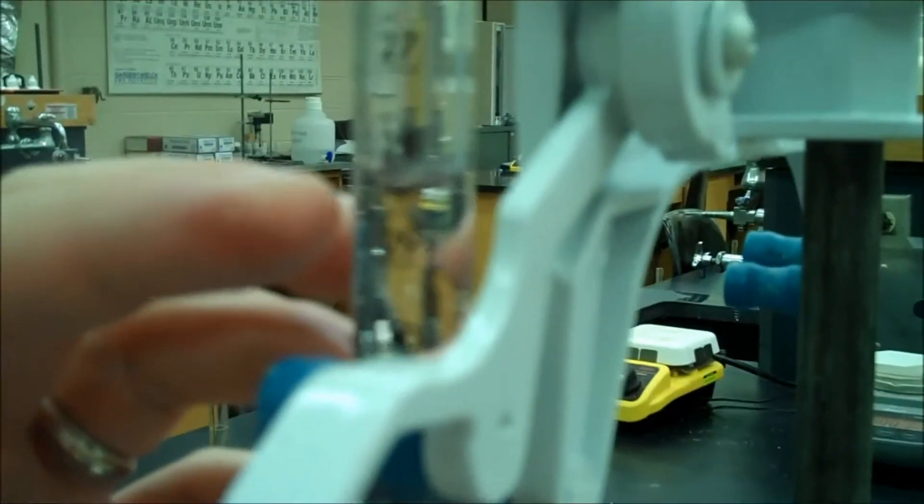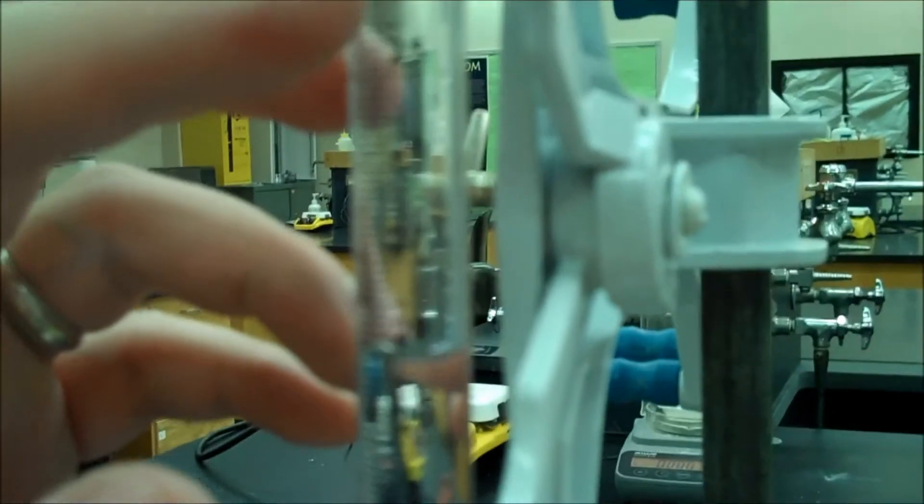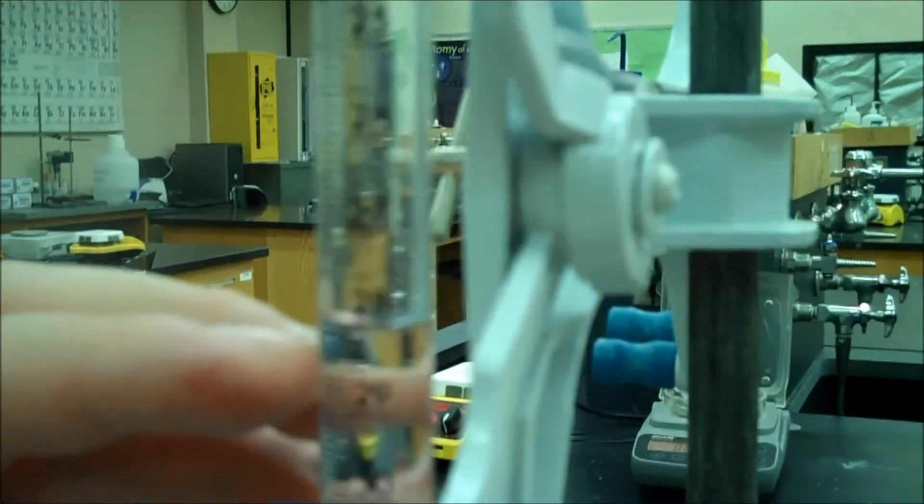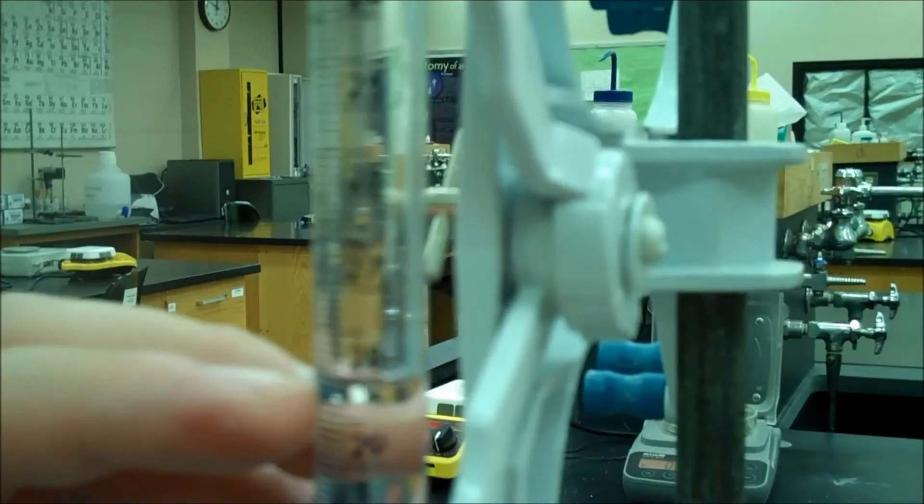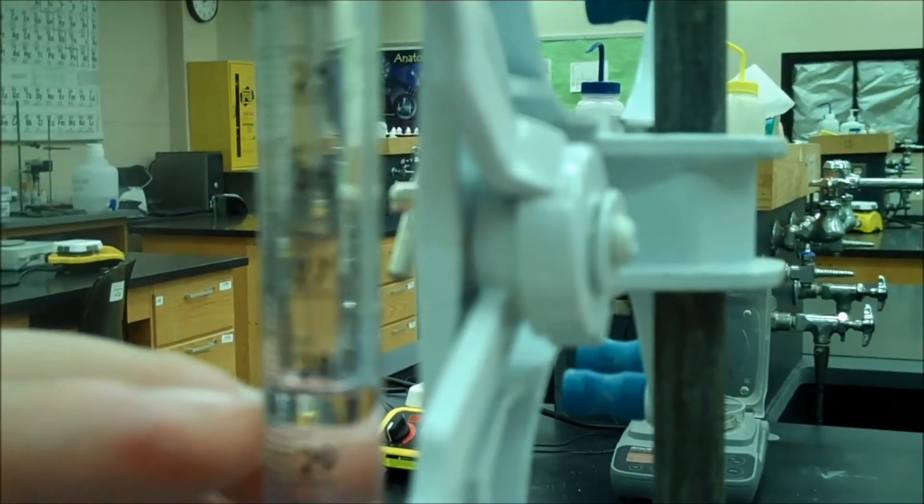Here, remember you're looking at the bottom of the meniscus, and note that the burette goes downwards, so just below 28 is 28 point something. Below 28 point one, I would say 28.16 milliliters.